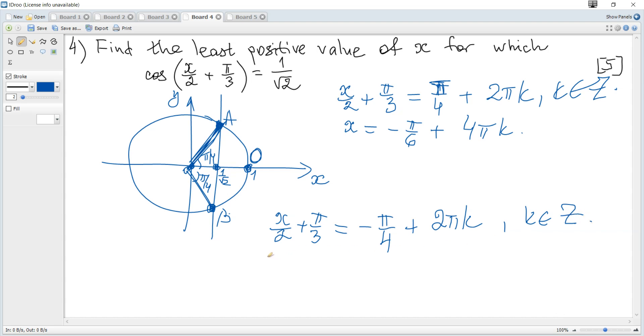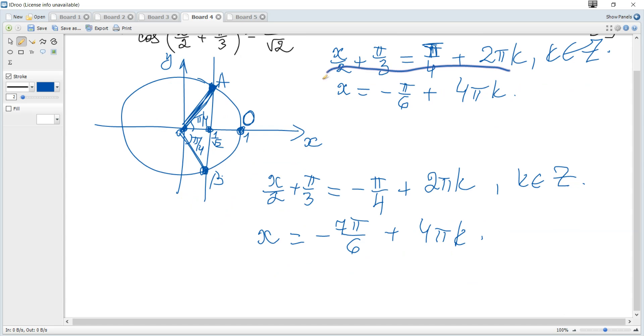So we can take minus π/4 plus 2πk, where k is integer. Again solve for x, move it to the right and multiply by 2 each term to get x equals minus 7π/6 plus 4πk. This together with the first solution gives us the general solution.